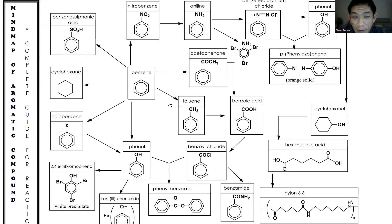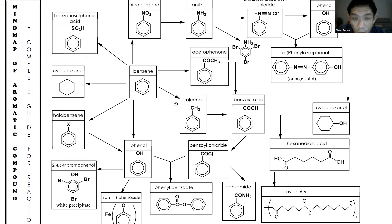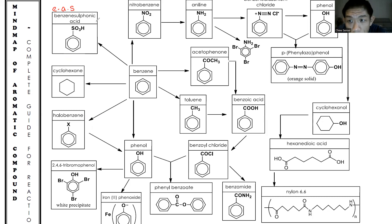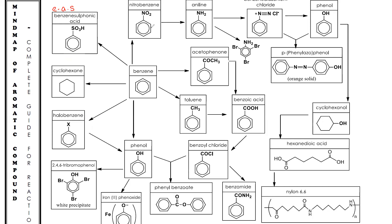Okay, so here you are looking at a mind map for aromatic compounds. There are basically five basic reactions of the halobenzene compounds. Most of these are electrophilic aromatic substitution reactions, and the mechanism you should try your best to remember as much as you can. With that, shall we begin?